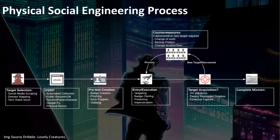Physical social engineering is about badge creation, vishing, tailgating, impersonation, on-site recon, capturing evidence, and on-the-fly countermeasures — changing outfits, having a backup pretext, changing location if you think you've been discovered. I've been into buildings, been caught, talked my way out, but still walked out with everything I wanted because they didn't check my bag on the way out.